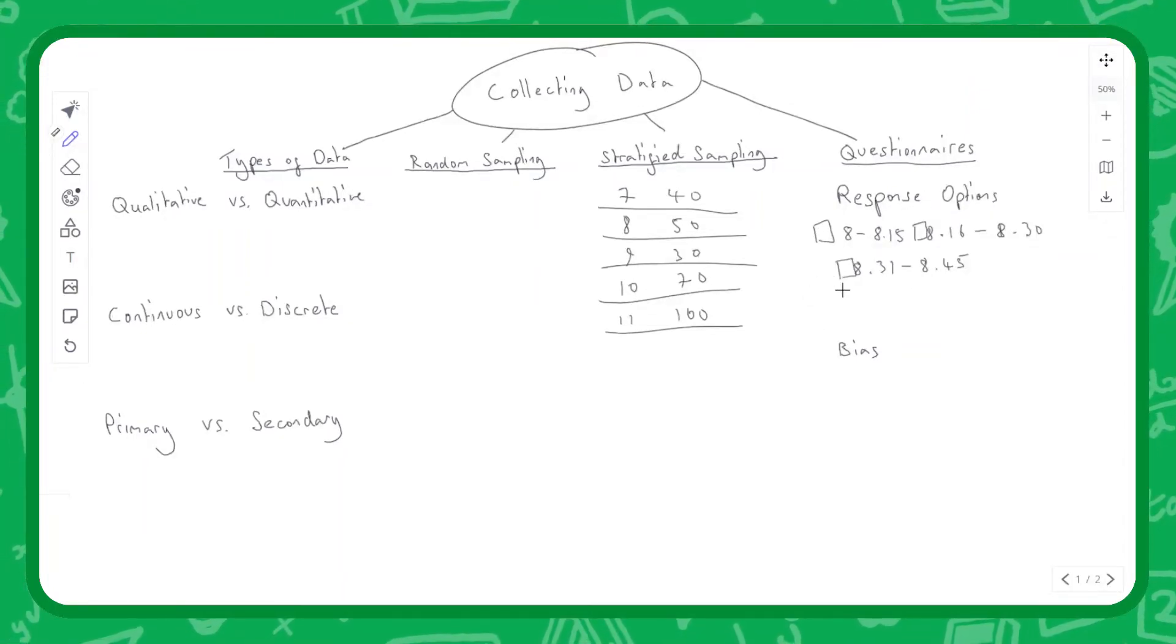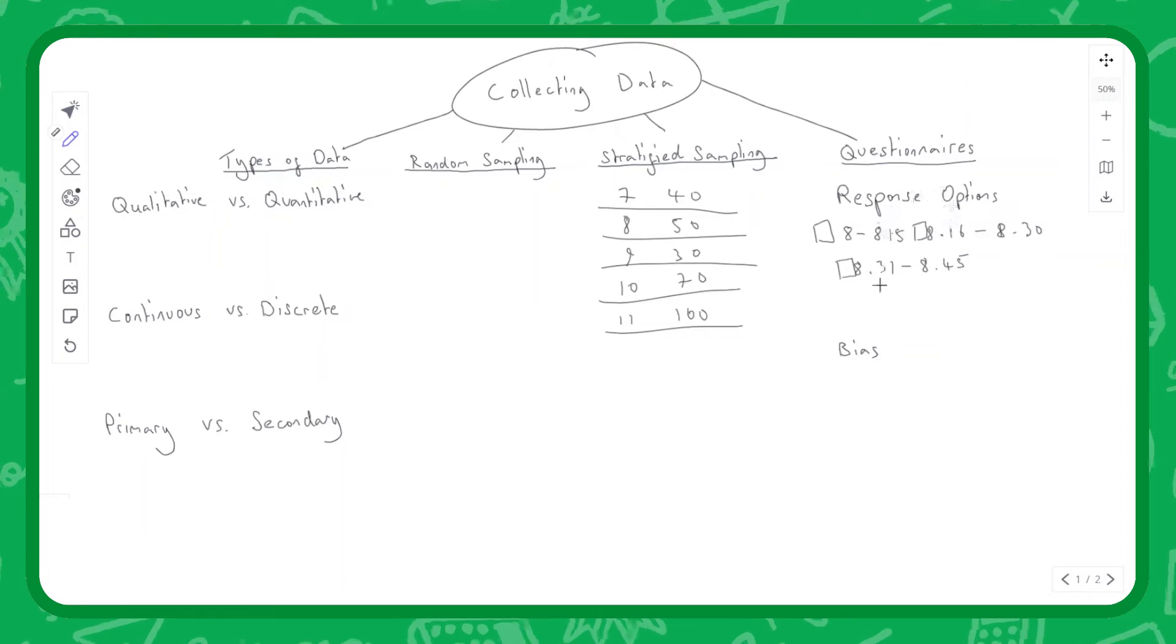While most people will fit into one of these three boxes, we also need to provide a box that captures all those people who wake up before 8:00. We could say anyone who wakes up before 8:00 tick this box. Likewise, if someone wakes up at 8:55, there's no box for them. We could say before 8:00 is one box, and to capture the rest of the people, after 8:45 will be another option.